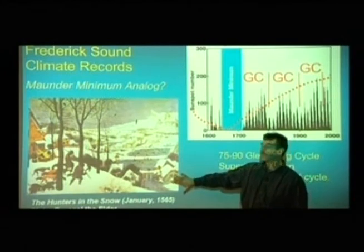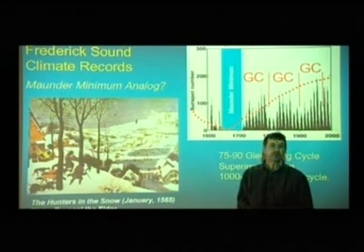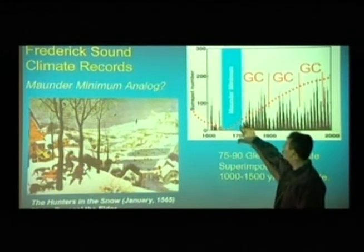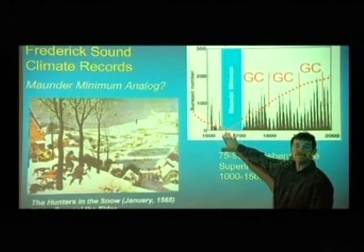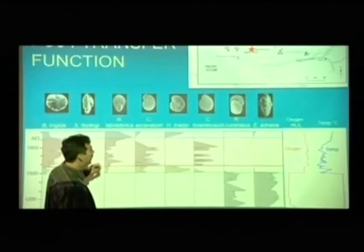Here's a sunspot cycle getting longer and longer, a Gleisberg cycle that's piggybacked on top of that. And another one, another one, and here we are at the present time. So we've gone from this sort of cold condition, low sun conditions, up to much warmer conditions as we have at the present time.